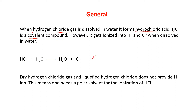The reaction is: HCl + H₂O forms H₃O⁺ and Cl⁻, because the hydrogen from HCl reacts with H₂O to form H₃O⁺. Please note that dry hydrogen chloride gas and liquefied hydrogen chloride do not provide H⁺ ions. One needs a polar solvent — H₂O — for ionization of HCl.